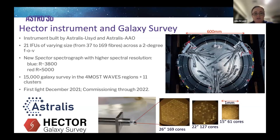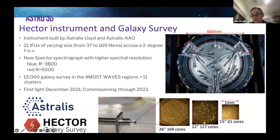Moving on to Hector — a quick snapshot. The Hector instrument was built by the University of Sydney and AAO. It has 21 IFUs — imaging fiber bundles or hexabundles — that vary in size and are placed across the two-degree field at the AAT telescope. Pictures in the bottom corner show a 61-core fiber bundle, the same size as in SAMI but with regular cores.